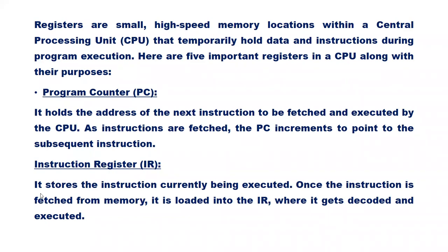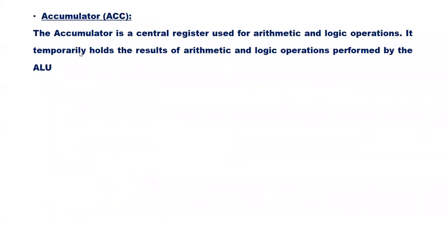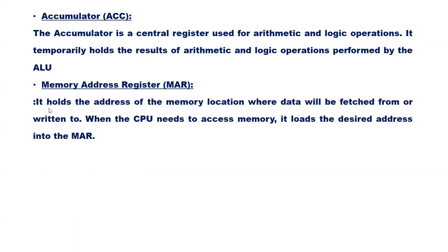The instruction register stores the instruction currently being executed. Once fetched from memory, the instruction is loaded into the instruction register where it gets decoded and executed. The accumulator is a central register used for arithmetic and logic operations; it temporarily holds the results of operations performed by the ALU. The memory address register holds the address of the memory location where data will be fetched from or written to; when the CPU needs to access memory, it loads the desired address into this register.